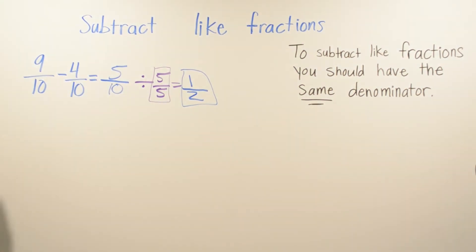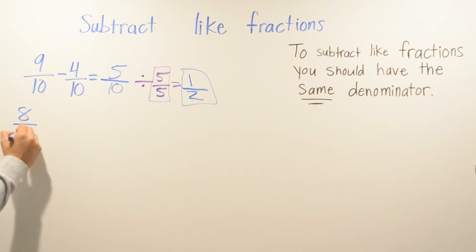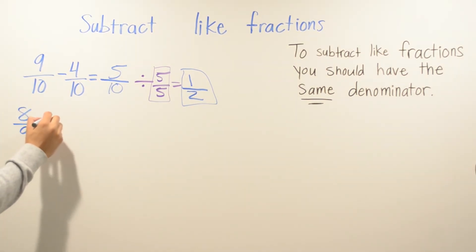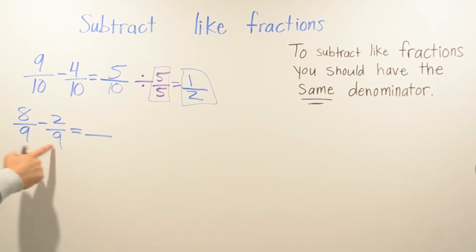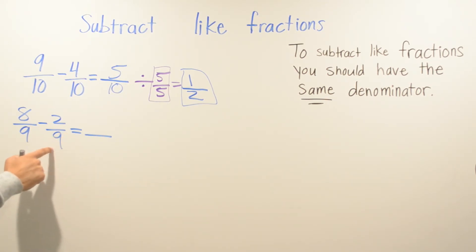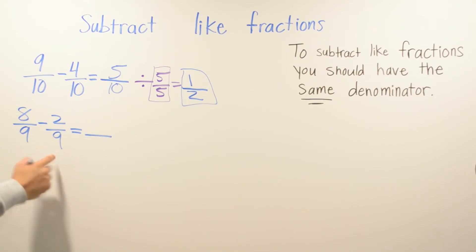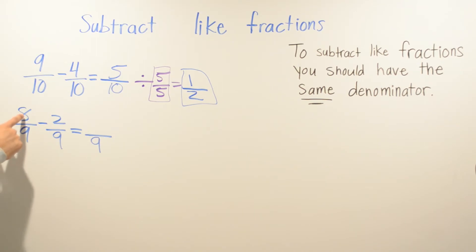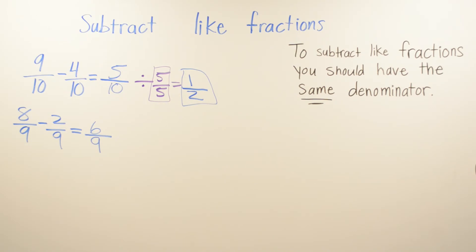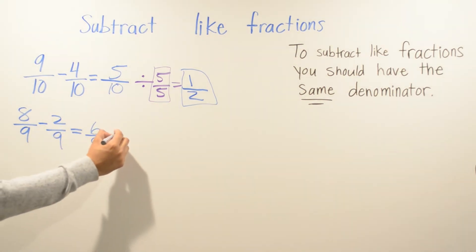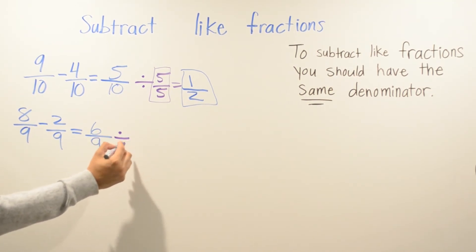Another example: 8 over 9 minus 2 over 9. Same thing — the denominators are the same so we can go ahead and subtract. The denominator always stays the same, so we put 9 as our denominator. Then we do 8 minus 2, which is 6, so we have 6 over 9. We can go ahead and simplify.